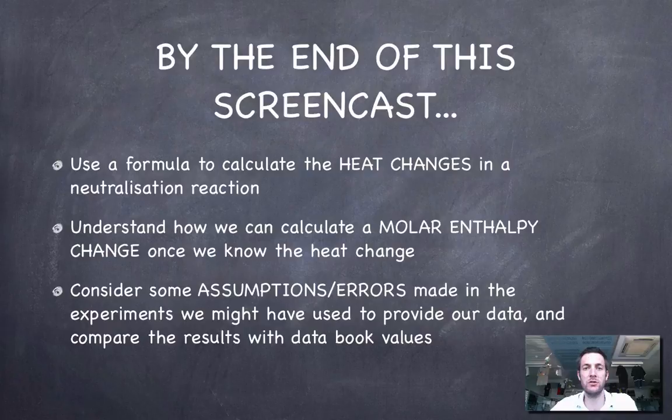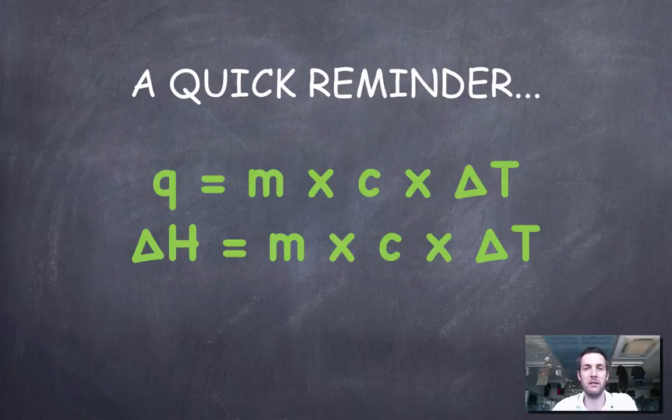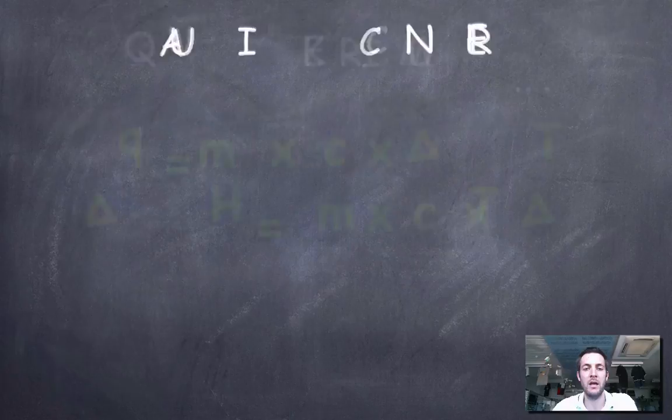Pretty much the same deal - we're going to use the formula that we've been using for a while now. We're going to calculate a molar enthalpy change of neutralization and once again look at the assumptions and errors that we might have made in our experiment to account for any differences between our results and the data book values. Here's a reminder of the formula we're going to be using. I'm not going to dwell on that too long because we should be quite familiar with it.